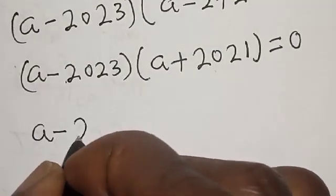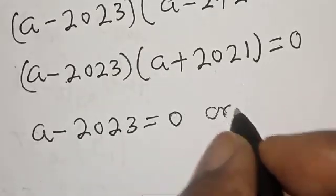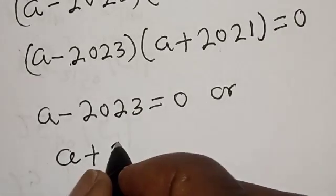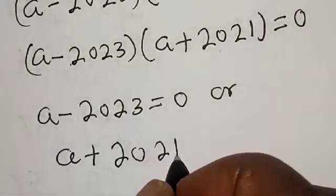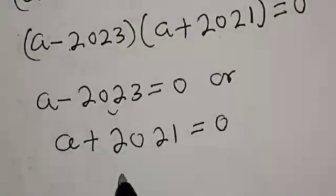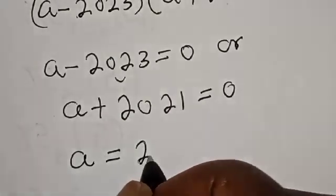Now there are two cases here: (a-2023) = 0 or (a+2021) = 0. And from here...